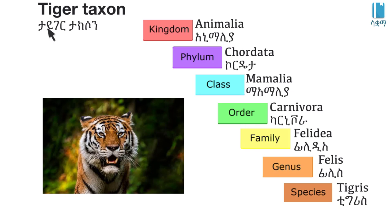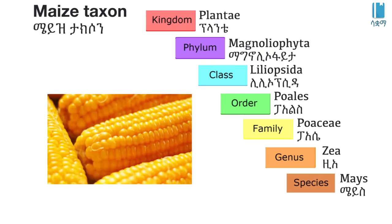Here is an example classification: Kingdom Animalia, Phylum Chordata, Class Mammalia, Order Carnivora, Family Felidae, Genus Panthera, Species tigris — this is the scientific classification of the tiger.